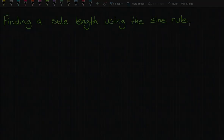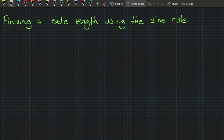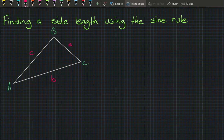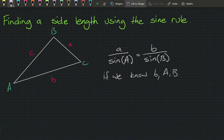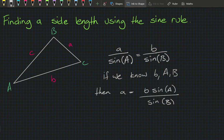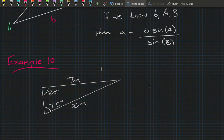For a triangle with angles A, B, C and side lengths a, b, c named to match, we know from the introduction that a over sine A equals b over sine B — distinguishing capital letters as angles and lowercase as side lengths. If we know all measurements other than side length a, we can manipulate the formula so that a equals b multiplied by sine A divided by sine B.